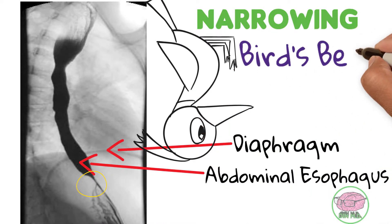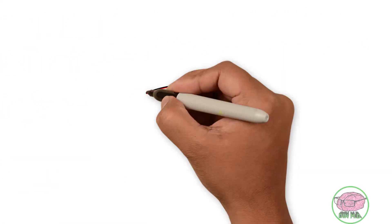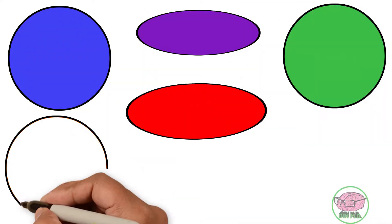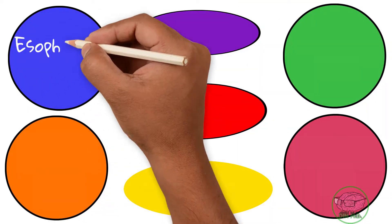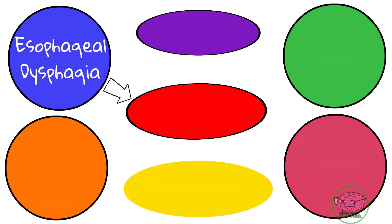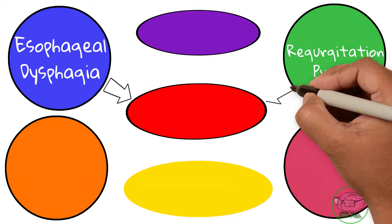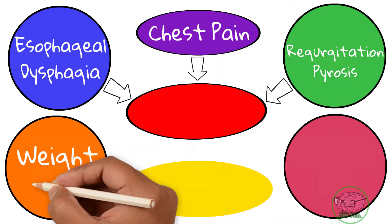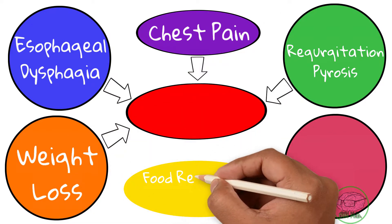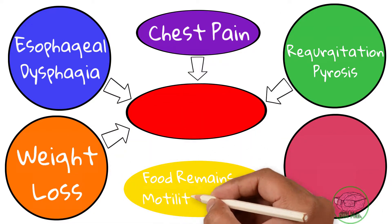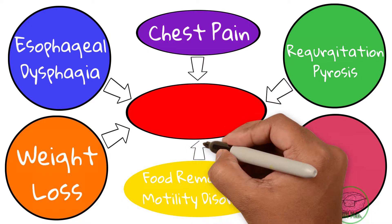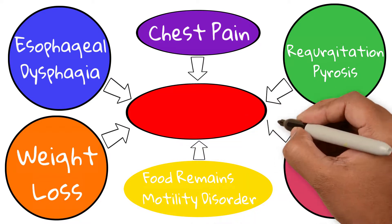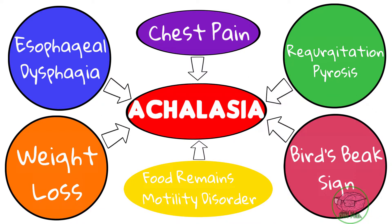This is the bird's beak sign. In conclusion, if we add up all of the symptoms — esophageal dysphagia to both solids and liquids, regurgitation, pyrosis, chest pain, weight loss, food remains on the endoscopy, a manometry showing a motility disorder, and the bird's beak sign — we have the diagnosis of achalasia. But we still need to figure out why Juan has achalasia.